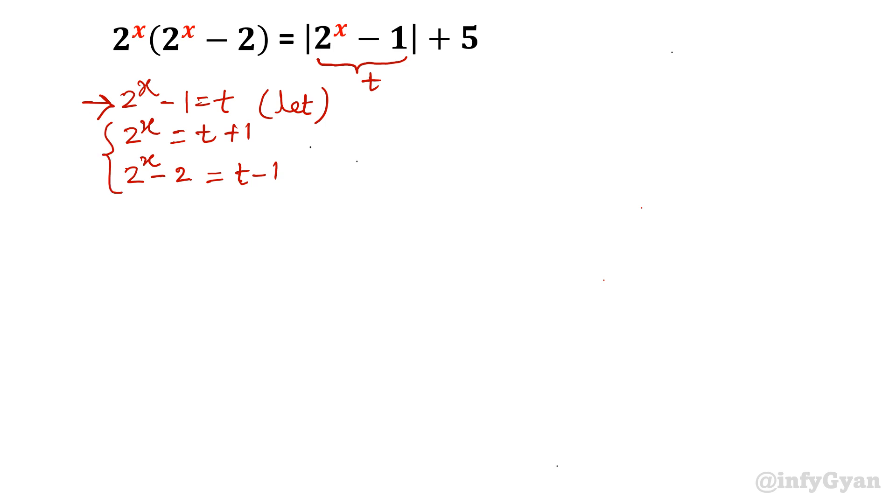And see both the values of left hand side. I evaluated, I calculated in terms of t. So now equation will convert it into original equation. I will write. Equation will be 2 power x is t plus 1. 2 power x minus 2 will be t minus 1 is equal to mod t plus 5.